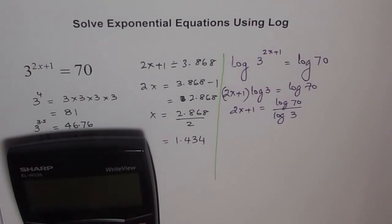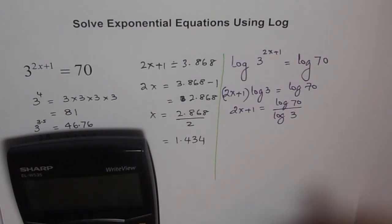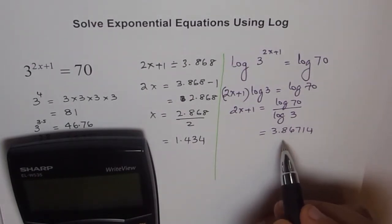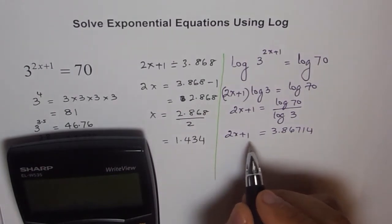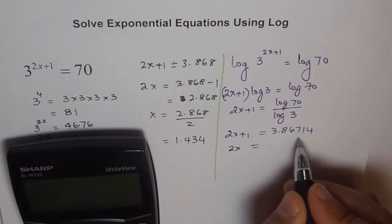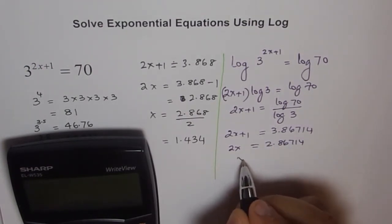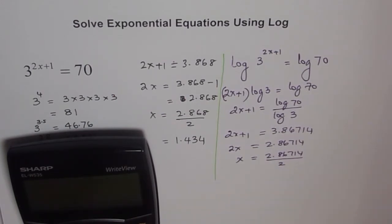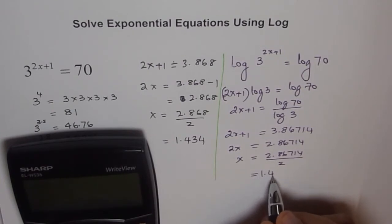We use the calculator's log function: press log, then enter 70 in brackets, divided by log of 3. We get 3.86714. So 2x plus 1 equals 3.86714. From here, 2x equals 3.86714 minus 1, which is 2.86714. Then x equals 2.86714 divided by 2, and we get 1.4335.